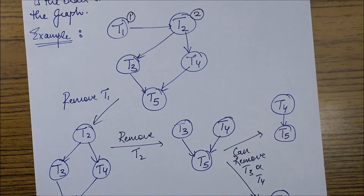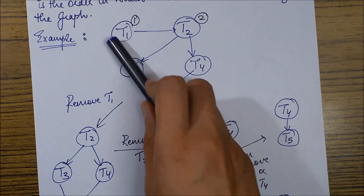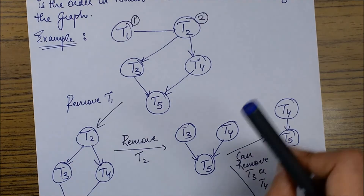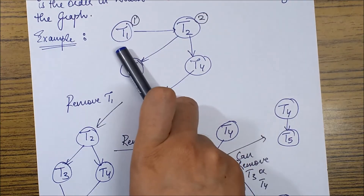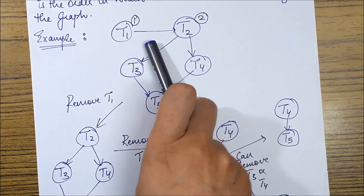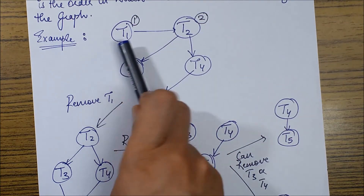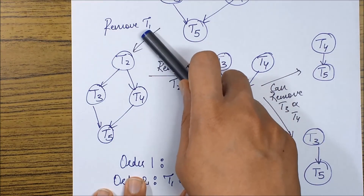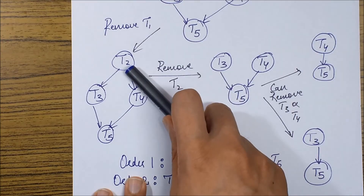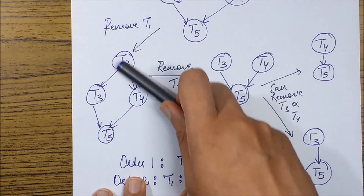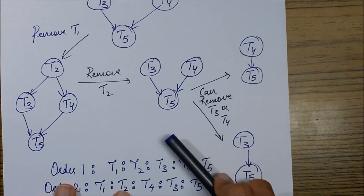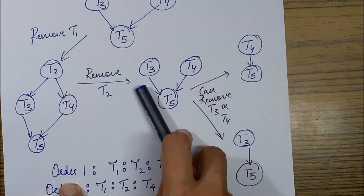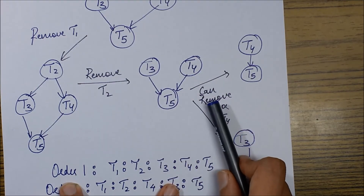Let's apply this to the example. T1 is the node which has in-degree 0 — in-degree represents the number of edges entering a node. There is no edge entering T1, only one edge moving outward, so out-degree is 1 but in-degree is 0. We remove T1 first. After removing T1, T2 becomes the node with in-degree 0, so we remove T2 and its edges. Now T3 and T4 both have in-degree 0, so we can remove either one, giving two possible serial orders.